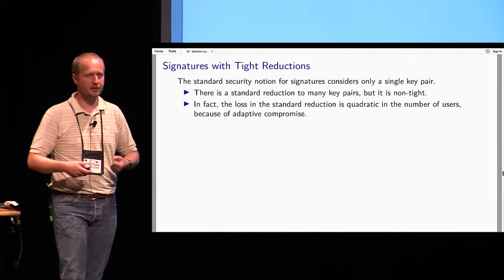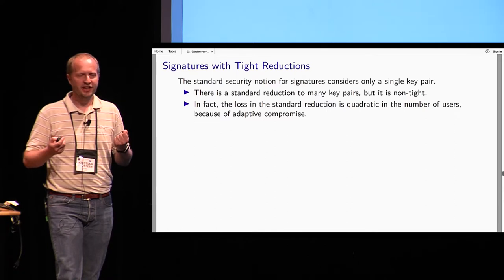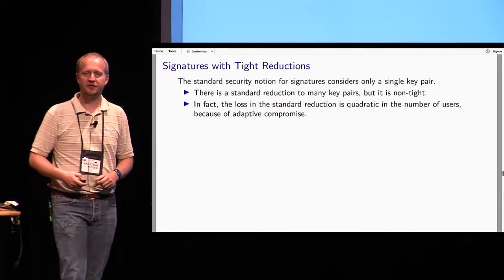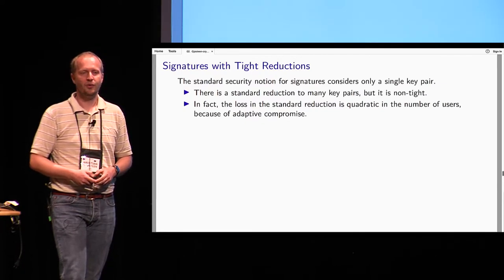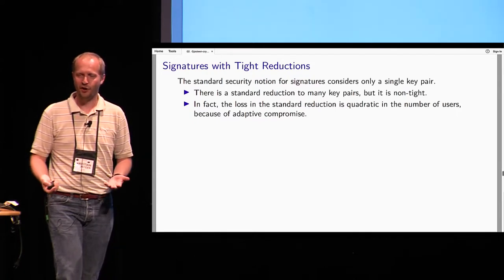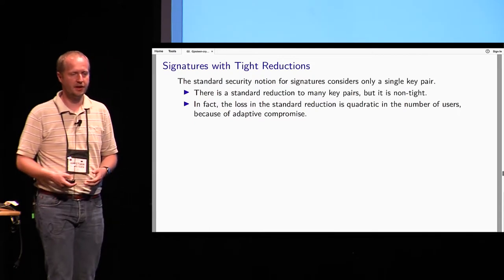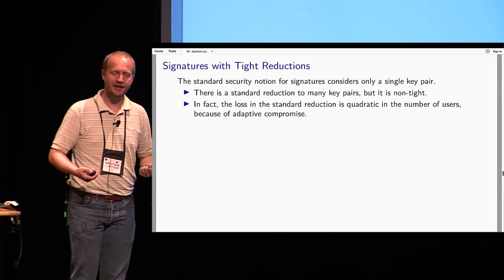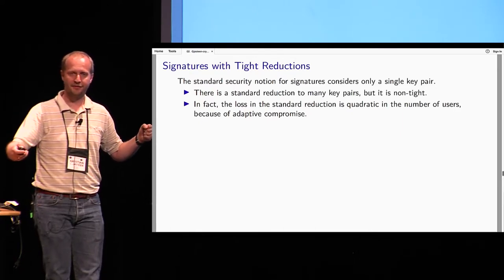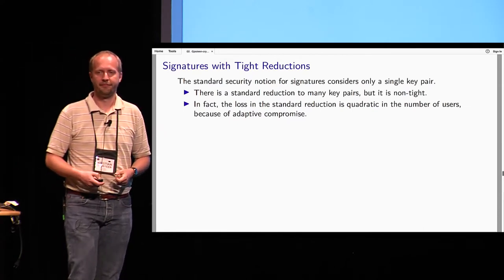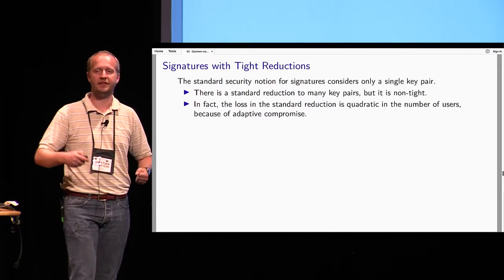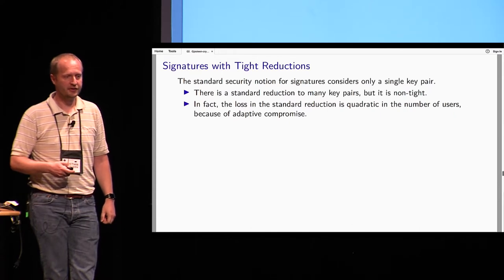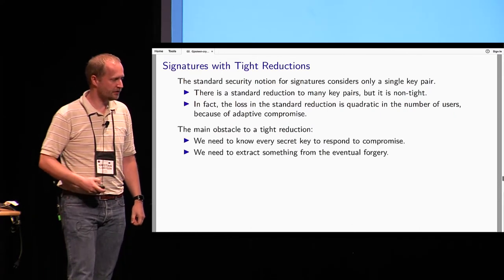What do I mean by a tight security proof for signature schemes? The signature game we learn in basic cryptography only considers a single key. To see why we get non-tight proofs when we consider many keys, consider RSA signatures: every user has their own RSA modulus, so which one do you get the adversary to factor? You get at least a one-over-n loss, and in interactive key exchange where we have to guess both parties who might be corrupted, we get an n-squared security loss. When we move to a situation with not only many keys but also adaptive corruptions, we need to do something with signatures as well, and that is substantially more complicated.